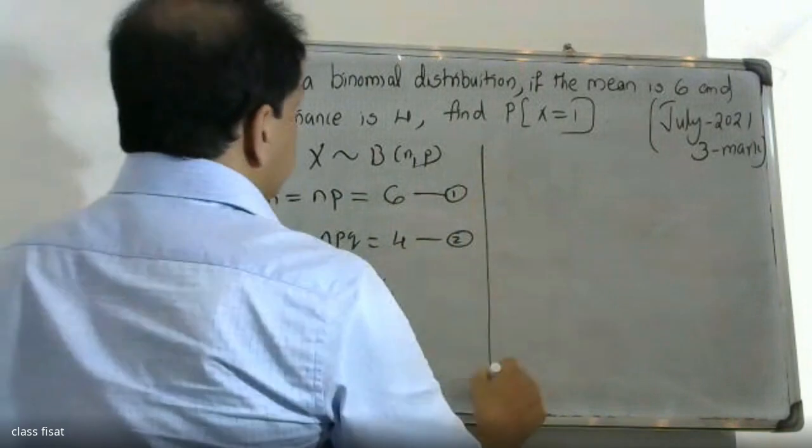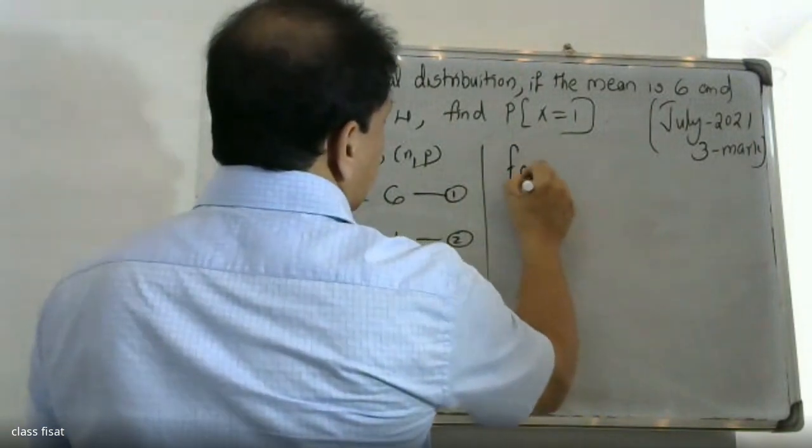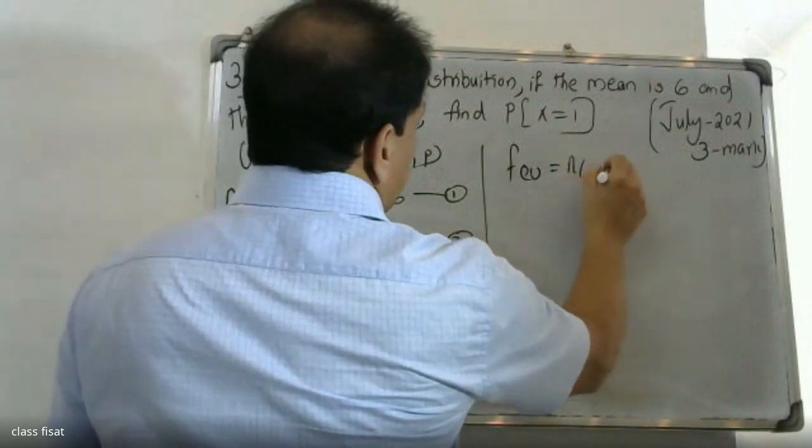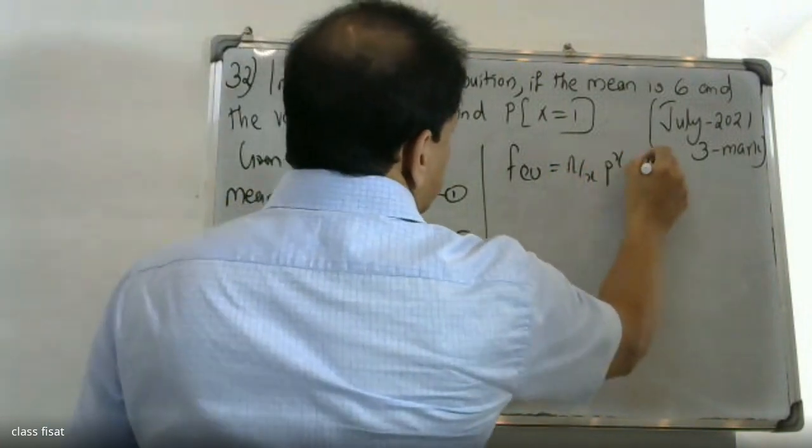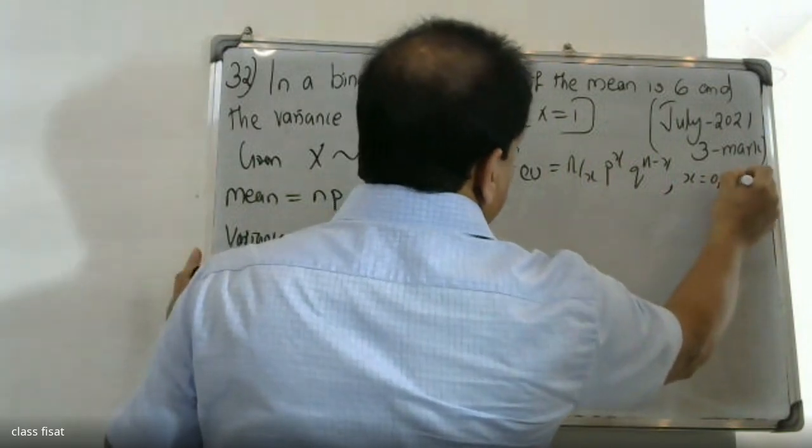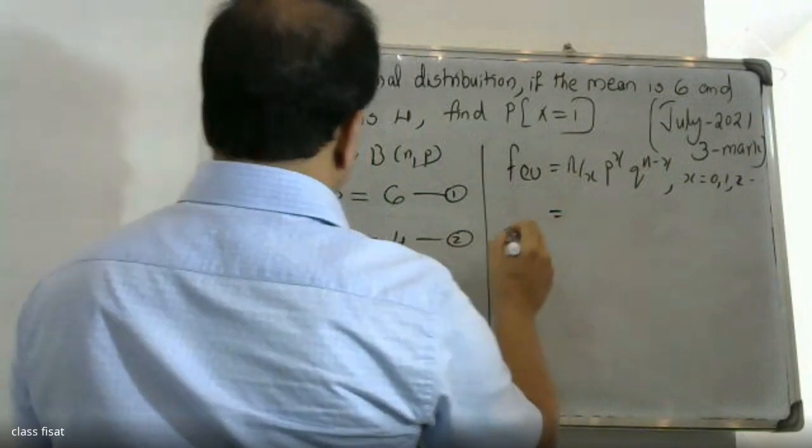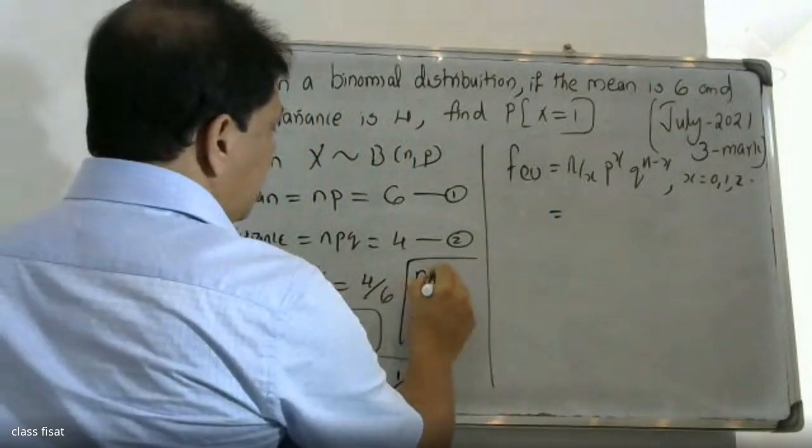The binomial distribution is given by P(X=x) = nCx × p^x × q^(n-x) for x = 0, 1, 2, etc.